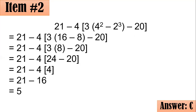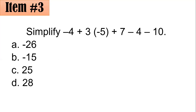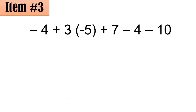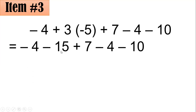Let's have question number 3. Simplify the expression: negative 4 plus 3 times negative 5, plus 7 minus 4 minus 10. This expression involves addition, subtraction, and multiplication. By the GEMDAS rule, we do the multiplication first: 3 times negative 5 is negative 15. The rest is just copied.